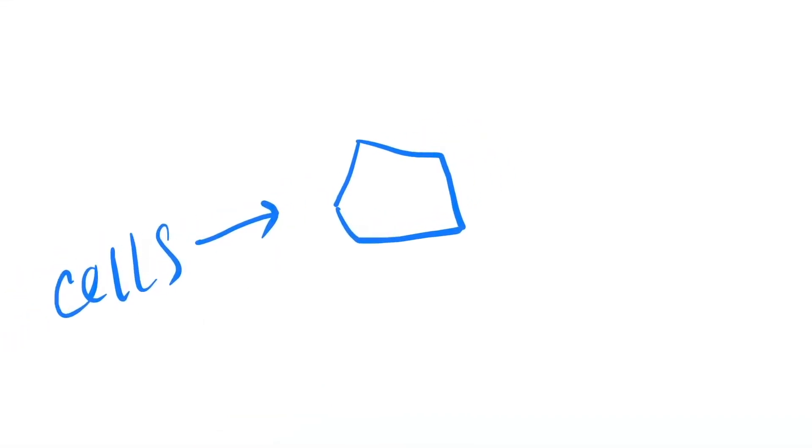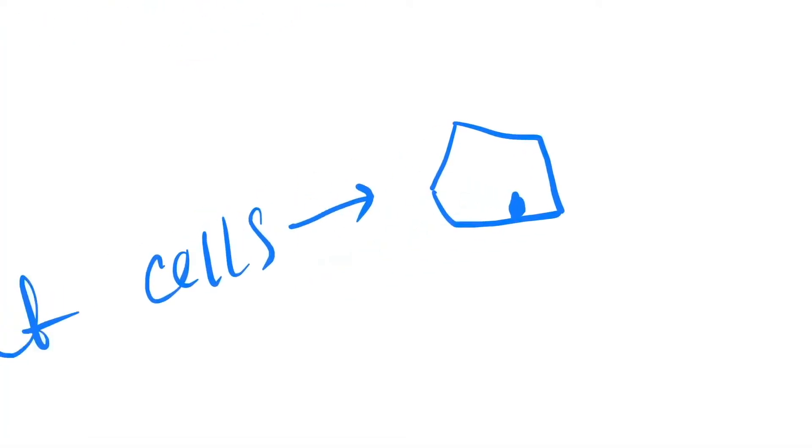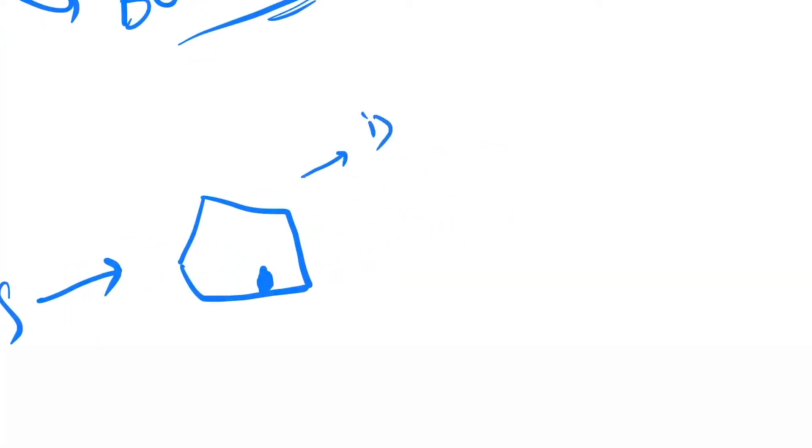Polygonal in nature. The center will be completely vacuolated and the nucleus will not be in the center, it will be eccentric in nature. So this is the feature of the fat cells.